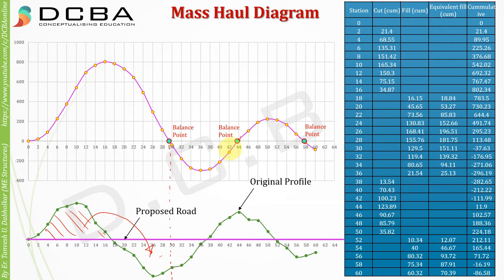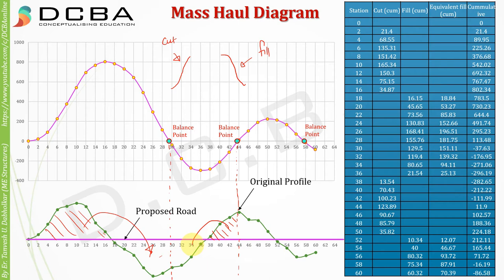Then again we have another balance point. One more characteristic of the Mass Haul Curve is that a rising limb represents a cut and a falling limb represents a fill. So a falling limb here till this point, then again there is a cut till this point. Whatever amount of cut you are doing till this chainage, this same amount can be filled in this part. Again there is a balance point here.